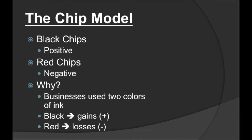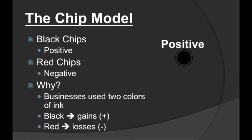If a company was losing money, that would be called being in the red, and that's the reason why it's called 'in the red' — because they wrote the losses in red ink. So again, black chips represent positive integers, and red chips represent negative integers.